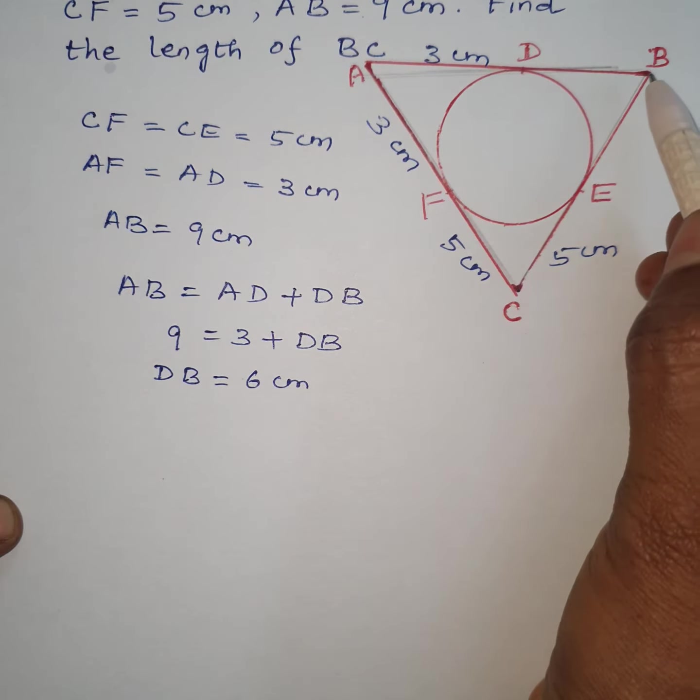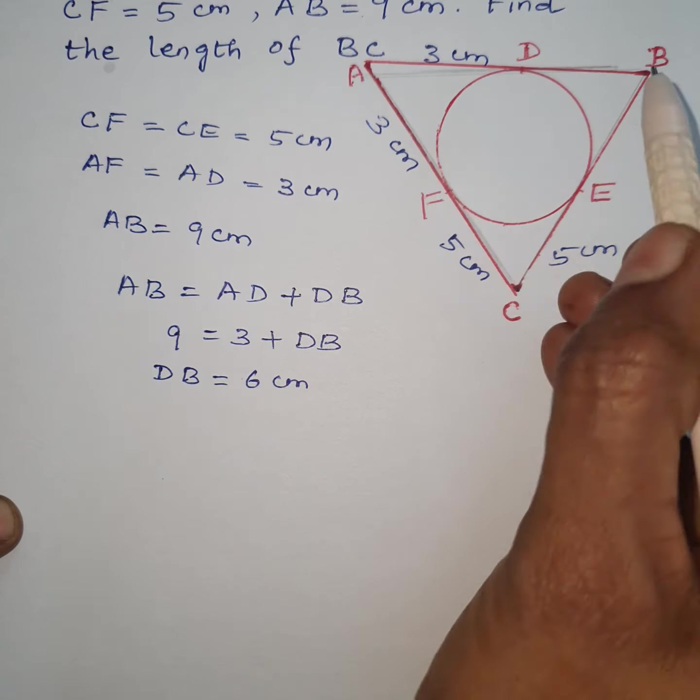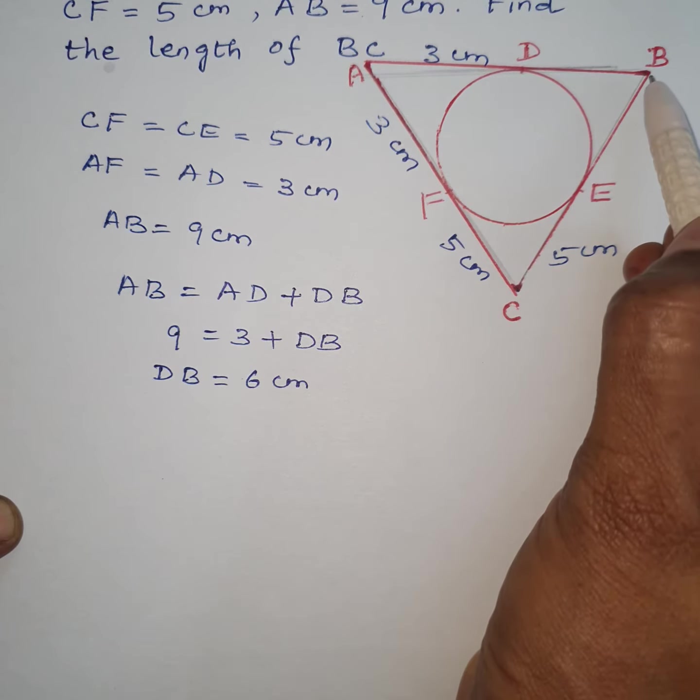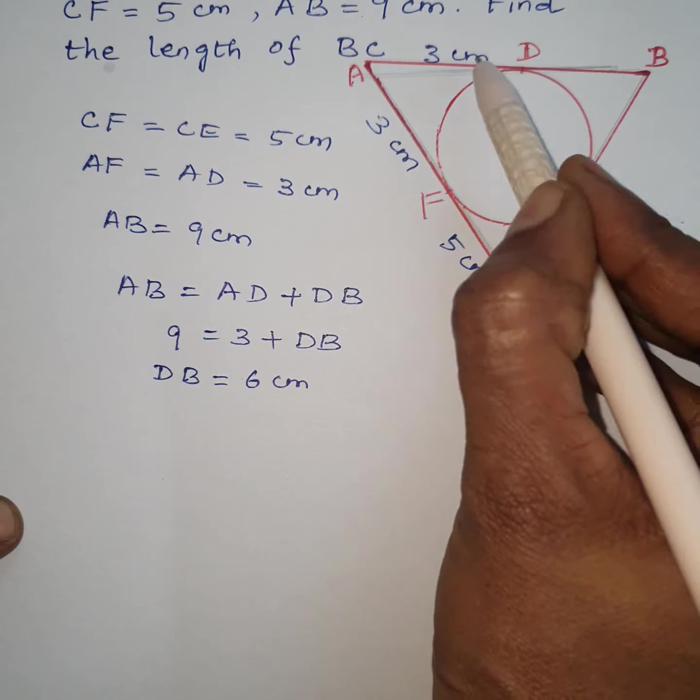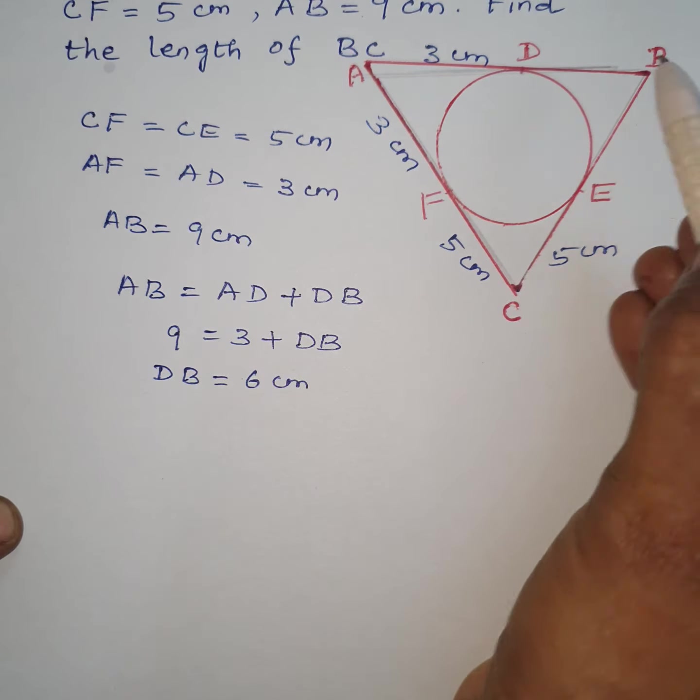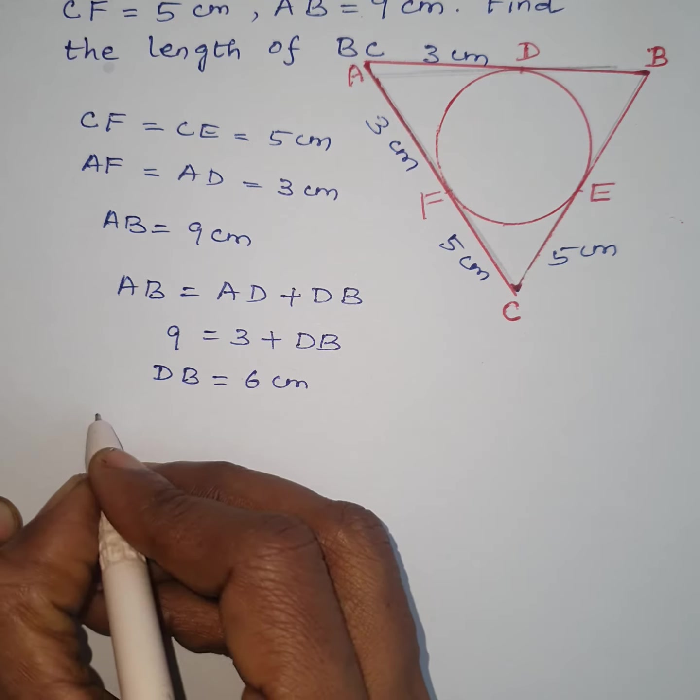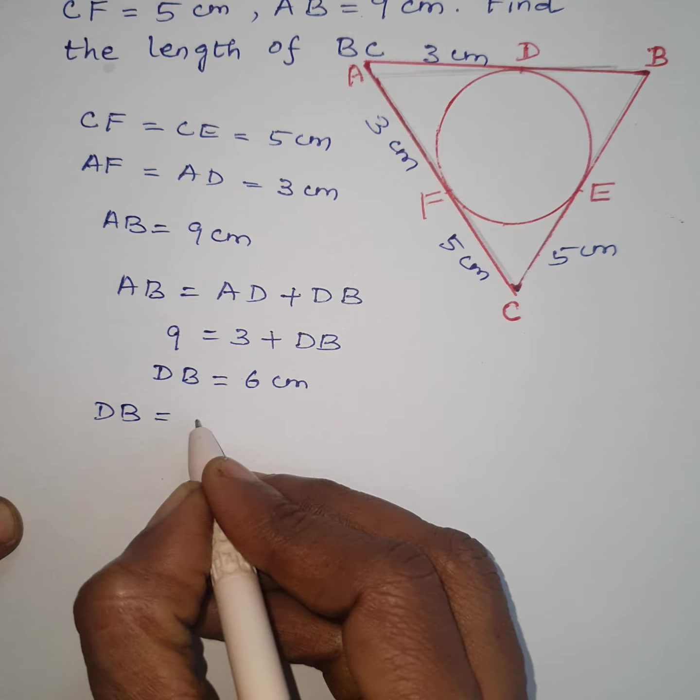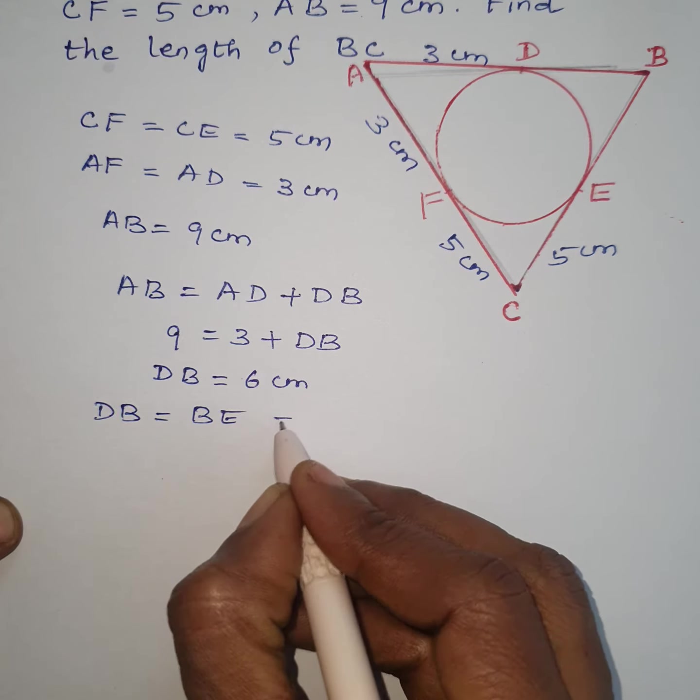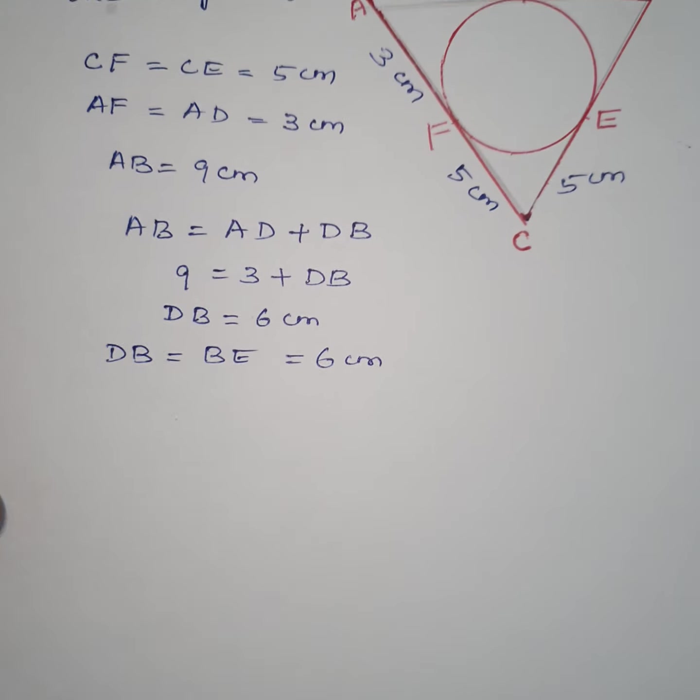And here B is also an external point, so the tangents drawn from this external point to the circle DB equal to BE. DB equal to BE, which is equal to 6 cm.